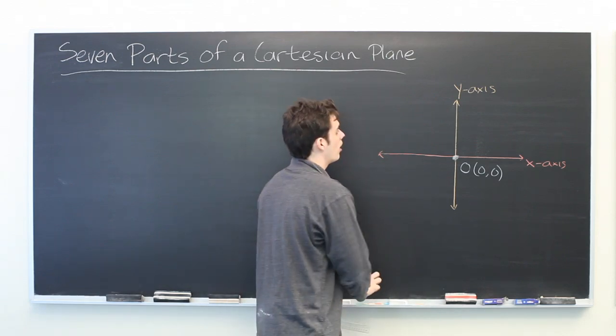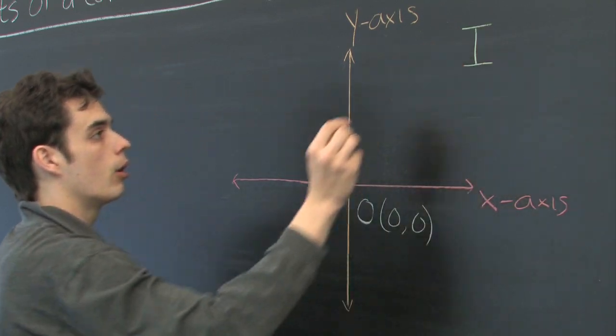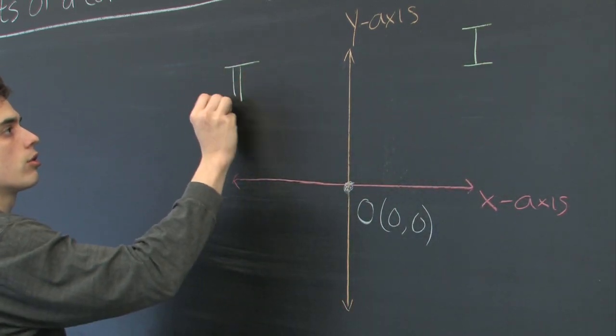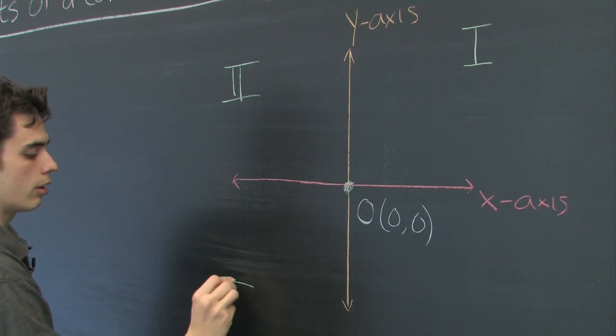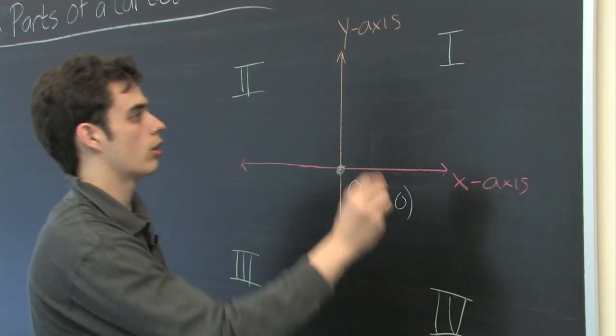Lastly, we have our four quadrants. Typically numbered one, two, three, four going counterclockwise.